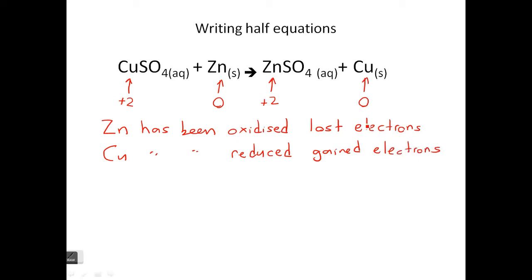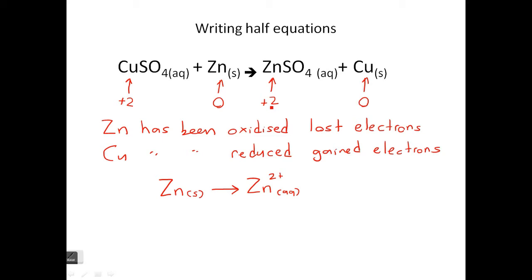What we can do now is write half equations. When you write a half equation, you start off with the species on the left, which in this case is zinc. It's being oxidized, so the electrons are going to be on the right side of the arrow — they're being lost. You write Zn, and remember it's 2 plus now, in aqueous solution. How many electrons has it lost? Well, it's gone from 0 to plus 2, so it's lost 2 electrons. You write 2e⁻ there.